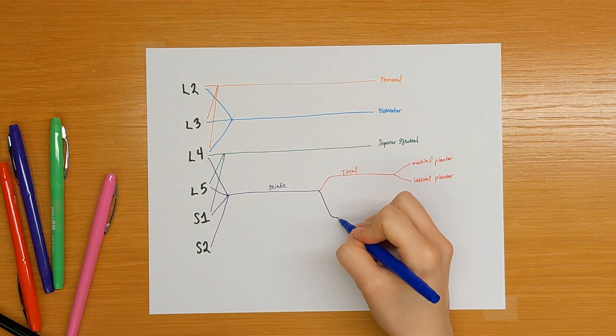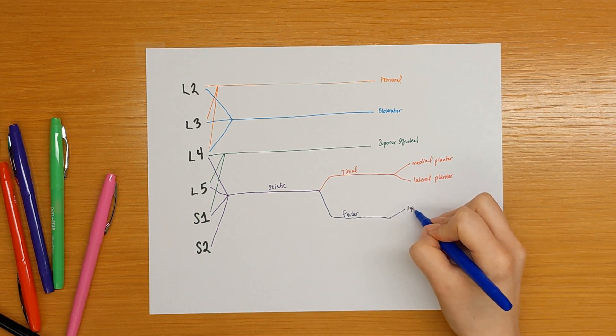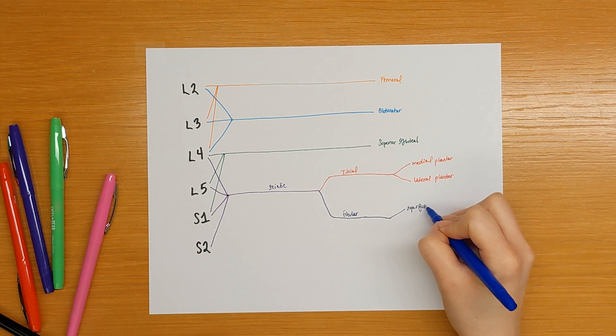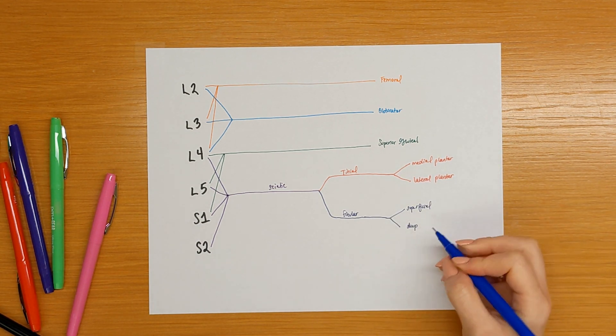And we need a little extra room, the fibular nerve which has its superficial and deep branches.